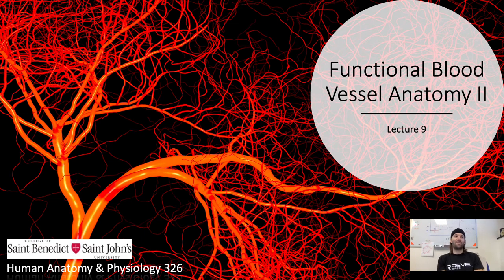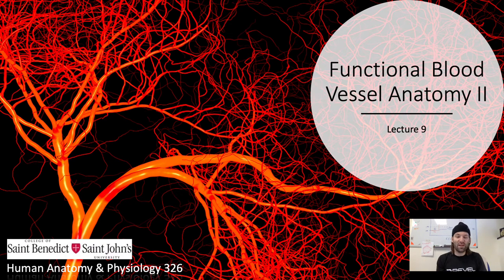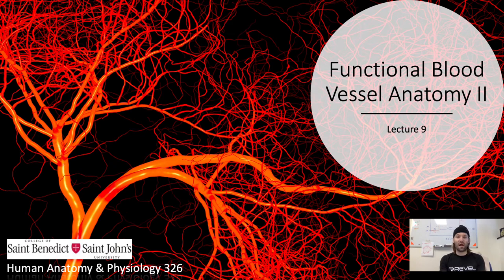Welcome. Today we are going to be finishing up our series on vessel anatomy before we move on to how we regulate local blood flow and blood pressure. Last time we did an intro series to the vasculature — we talked about the different tunics or layers of the three vessels and how they differed, and then we spent the majority of the time talking about the arteries specifically and the different kinds and what they do for us.